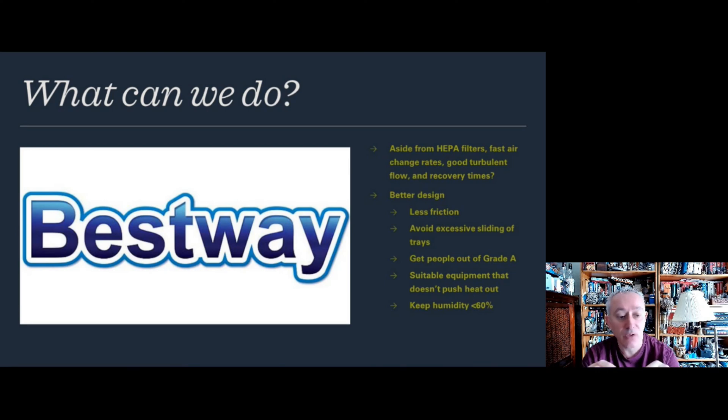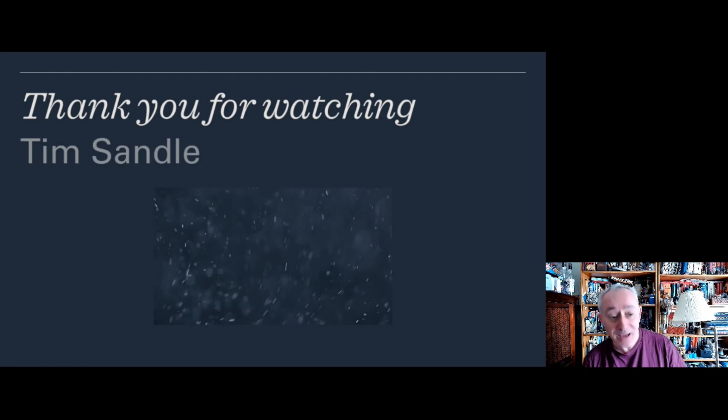We can also eliminate the people factor by introducing automation and eventually robotics. This connects with getting people out of grade A and having suitable equipment that doesn't push out heat. Also keeping humidity on the lower end - we're designing clean rooms ideally to have humidity at 60% relative humidity and below. This brings this video to an end.